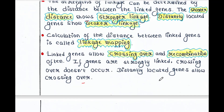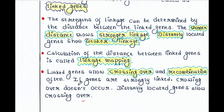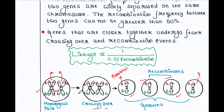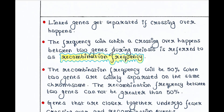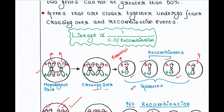So, linked genes allow crossing over and recombination often. If genes are strongly linked, crossing over doesn't occur, as we saw with genes A and D. Distantly located genes allow crossing over — gene A and gene B allowed crossing over. Linked genes get separated if crossing over happens. We saw that crossing over happened and linked genes capital A and capital B got separated — capital A is now with small b, and small a is now with capital B.